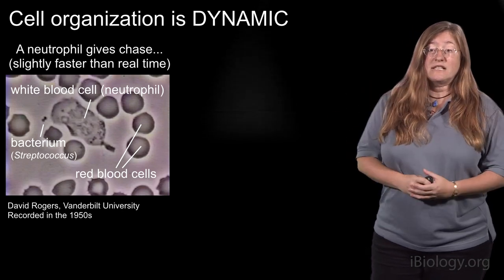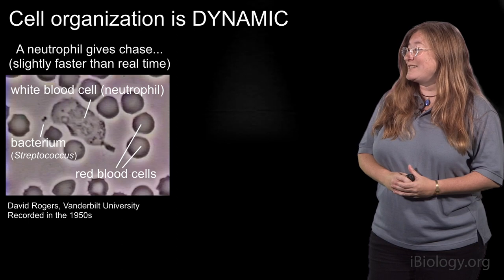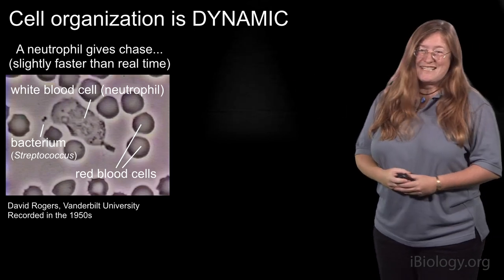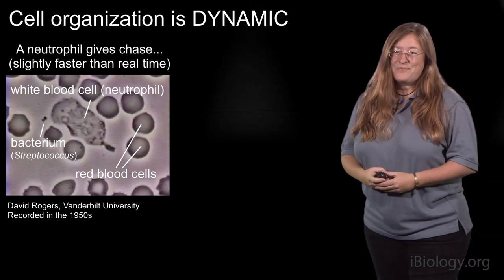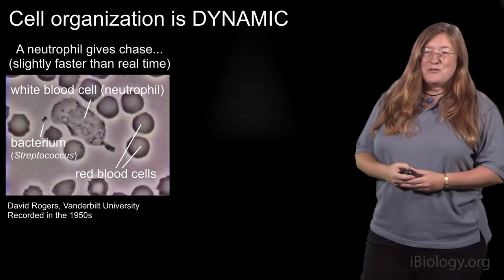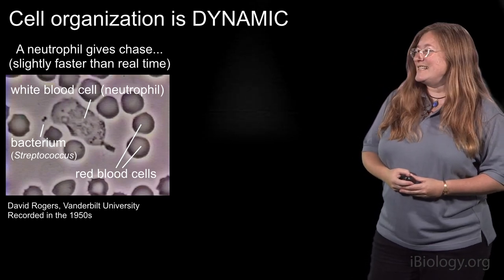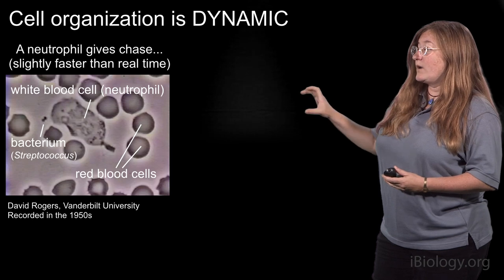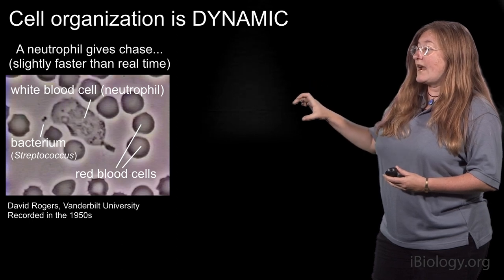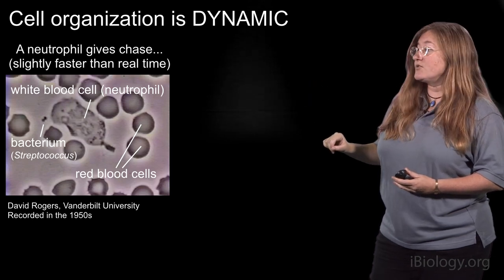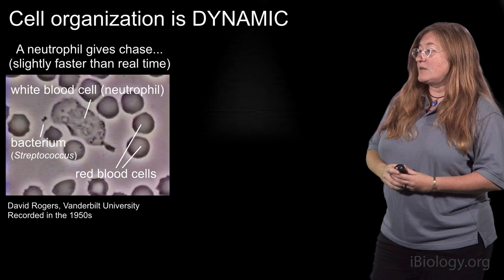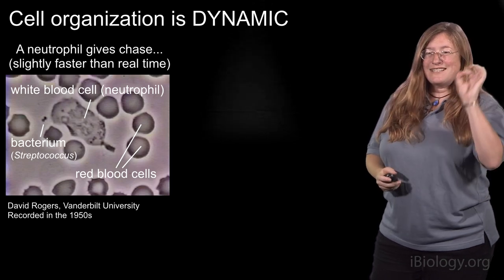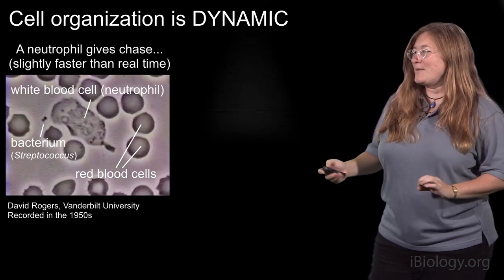This is certainly true of the cytoskeletal elements, and I think that's really beautifully illustrated by this classic movie of a neutrophil chasing down bacteria. This movie was made by David Rogers at Vanderbilt University in the 1950s, and what we're looking at here is a blood smear, where the little round dark objects are red blood cells. The white blood cell is labeled in the middle, and right at the front end of the white blood cell is a tiny little pair of bacteria.